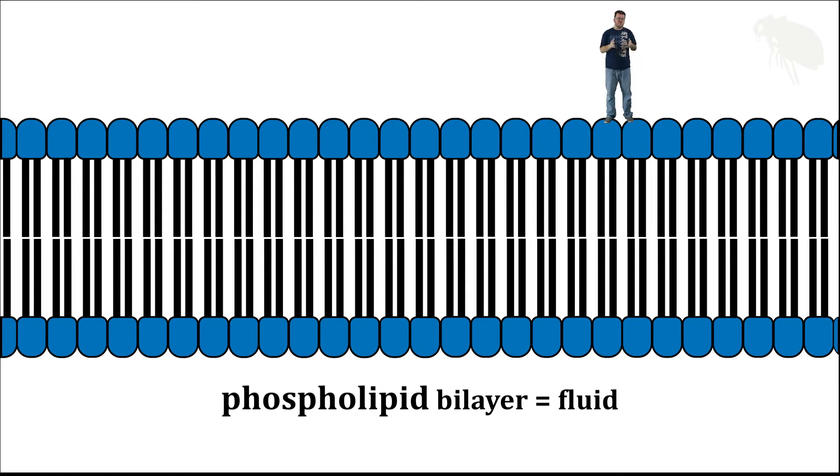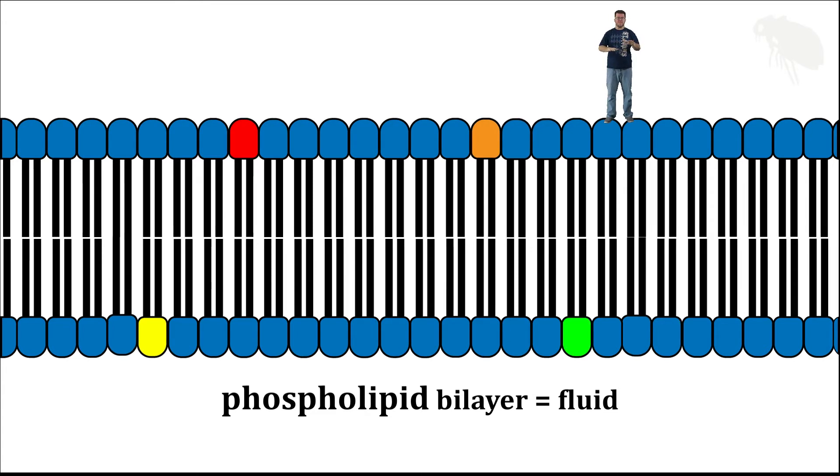I'm going to go ahead and change the color of a few phospholipid heads just so you can see. Track those heads. Those phospholipids can move around within the membrane. So it's a barrier between the cell's interior and the external environment, but it's a fluid barrier. Now it's not just about the fluid barrier. There's other molecules involved as well.